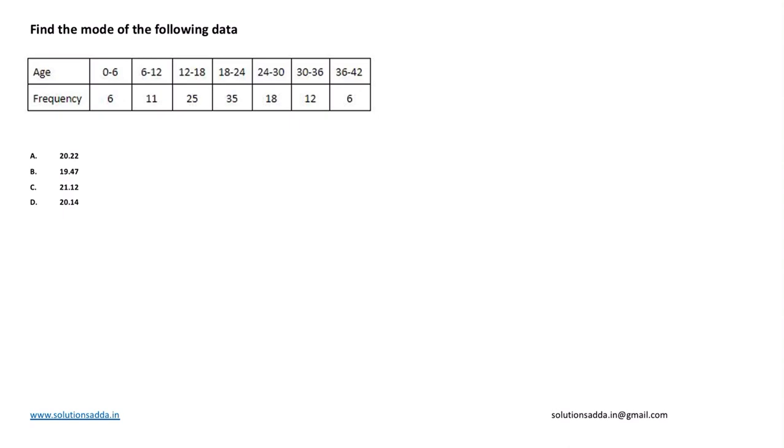So we know the formula for mode is: mode equals L plus h into frequency maximum minus frequency previous, divided by f max minus f previous plus f max minus f next. L is the first year of age for the maximum frequency.